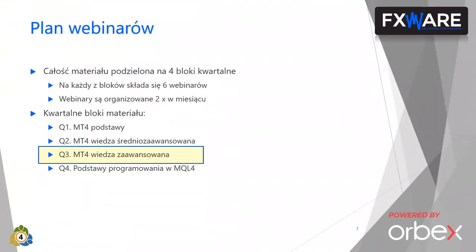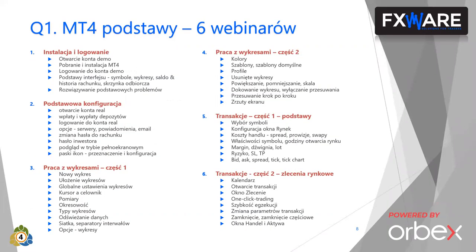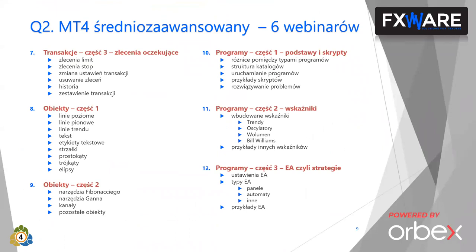Przechodząc do merytoryki, plan całego cyklu MetaTrader 4 bez tajemnic to 24 webinary podzielone na 4 bloki kwartalne, po 6 webinarów w kwartale. Dwa bloki już mieliśmy w całości, czyli podstawy MT4 i wiedza średnio zaawansowana. W tej chwili przerabiamy blok 3, wiedza zaawansowana, a w czwartym opowiemy o podstawach programowania w MQL4, czyli języku używanym w MetaTrader.